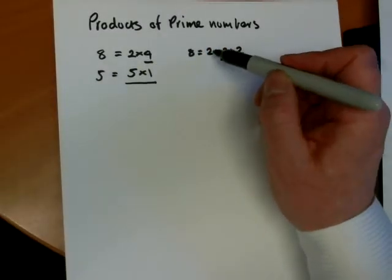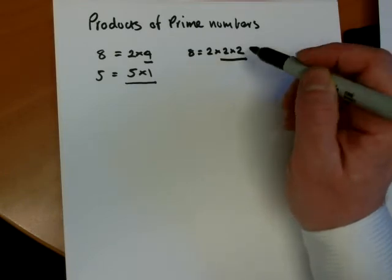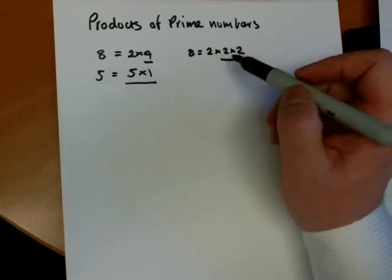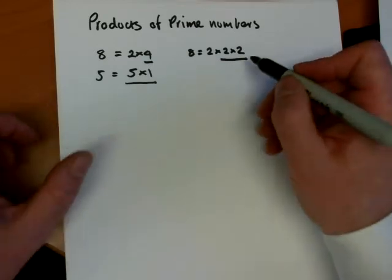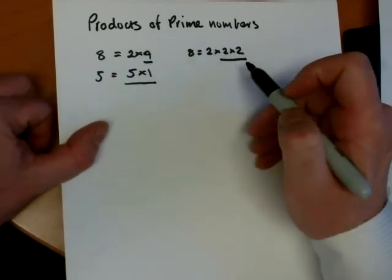So now, each number in this product is prime, and it would be pointless carrying on with it. We would just repeat 2 times 1, 2 times 1, 2 times 1. So we stop at this point when every number is prime.